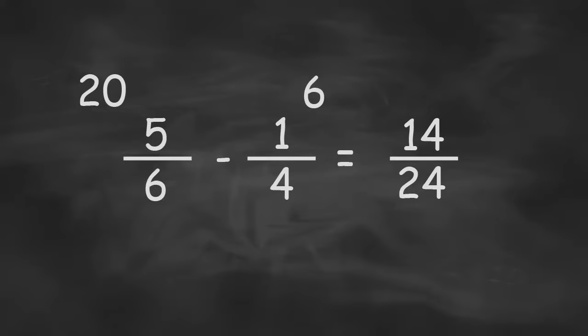Now this answer is correct, but it's not yet simplified because 14 and 24 can be divided to make a simpler number. In this case, both can be divided by 2, making our simplified answer 7 over 12. So the method works exactly the same, but our answer just had to be simplified when we came to the end.